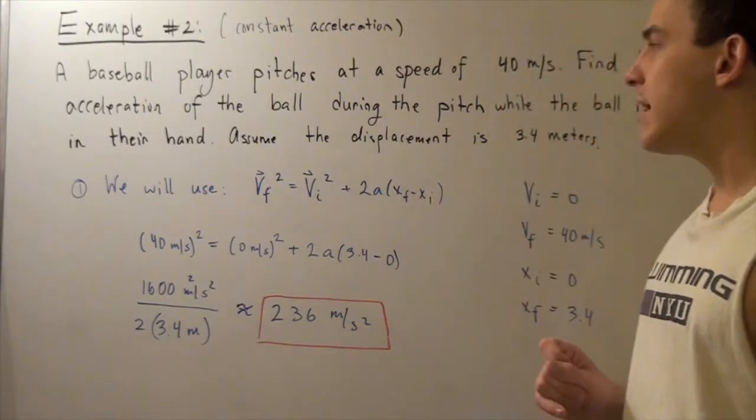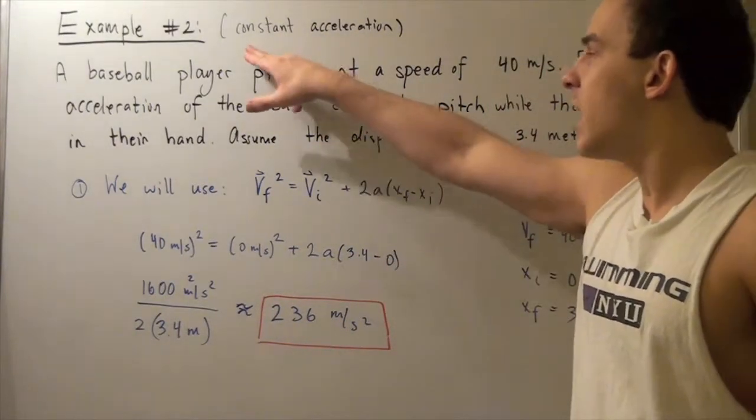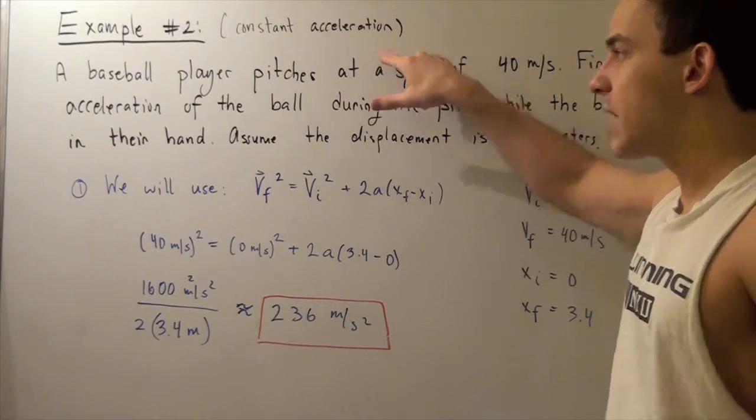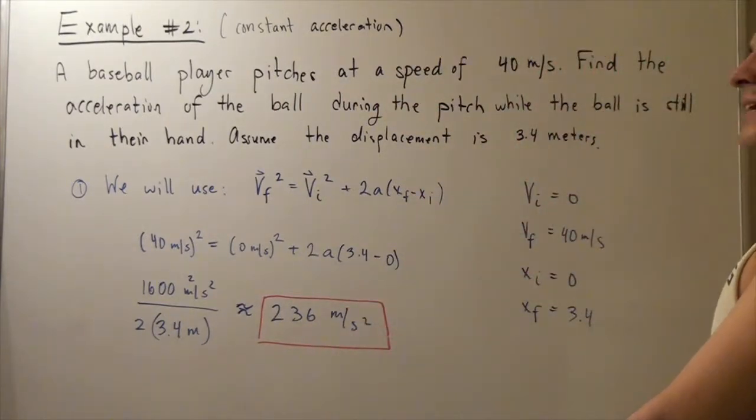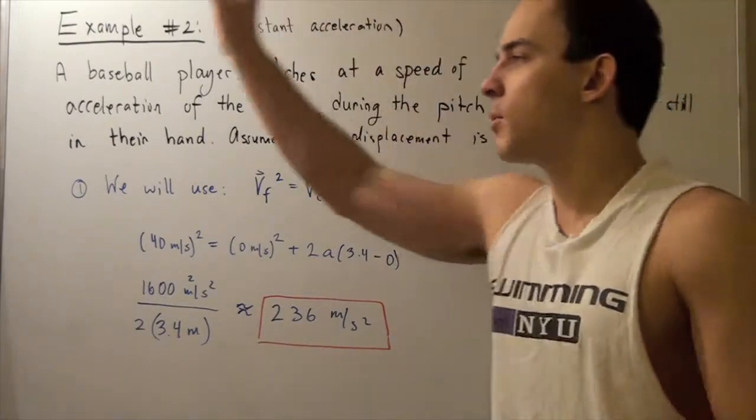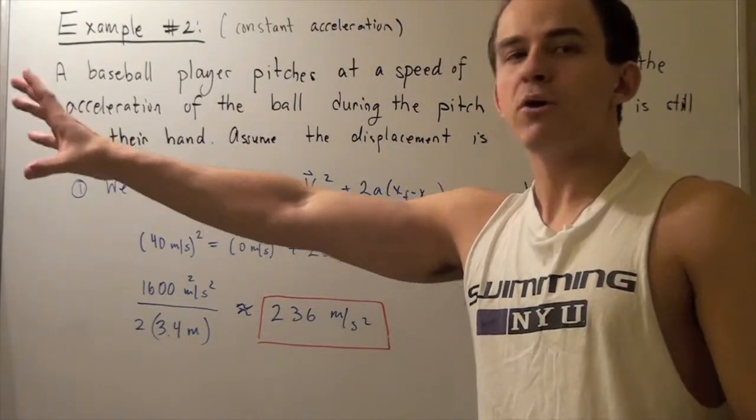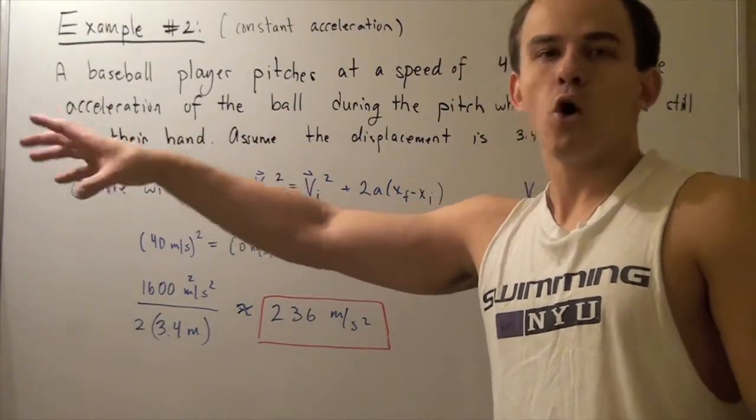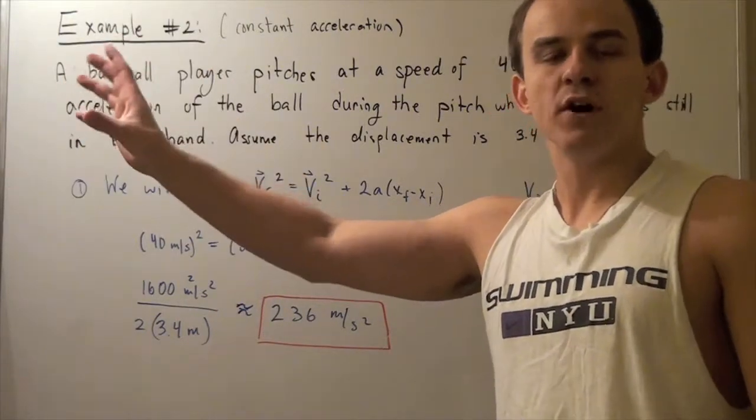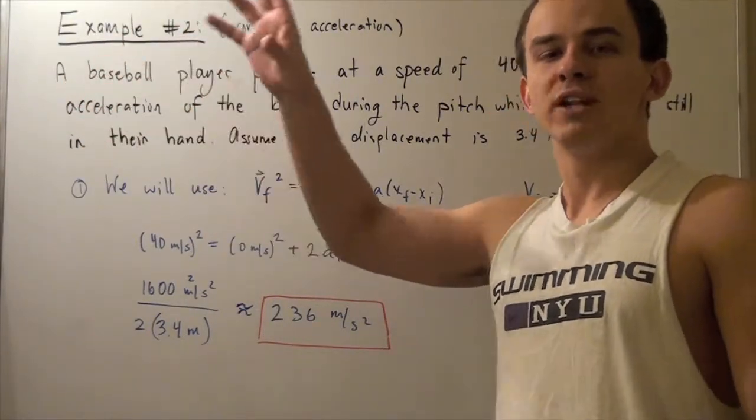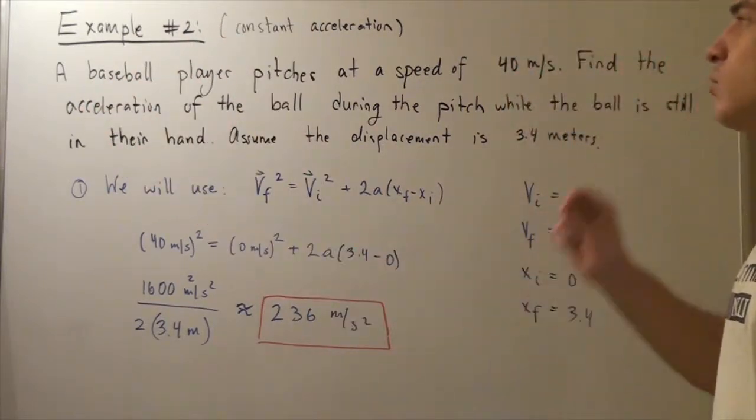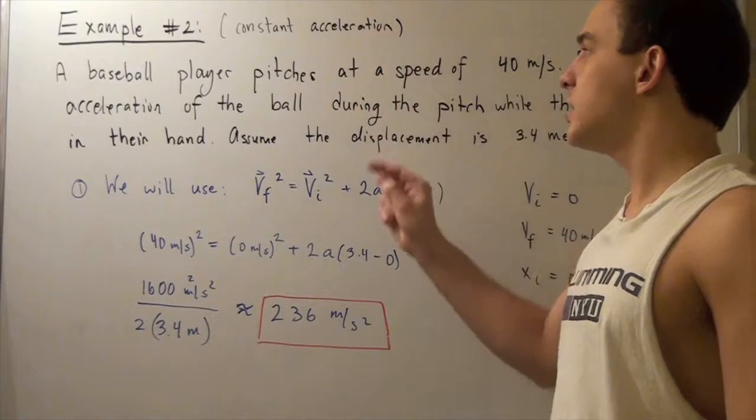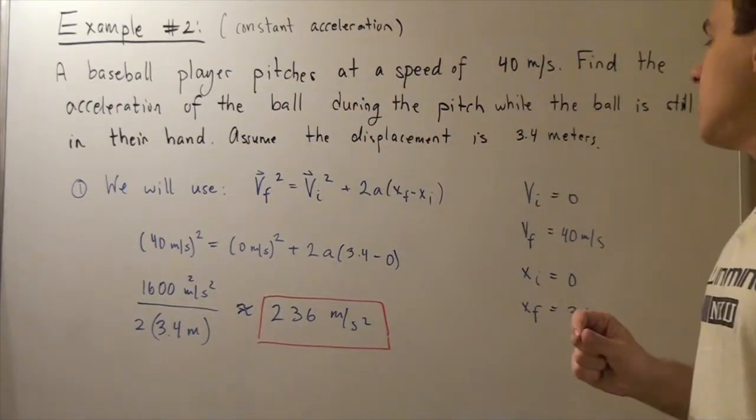We're also going to make the assumption that we have constant acceleration. That simply means that from the point the person begins the pitch to the point the person releases the ball, the ball travels a displacement of 3.4 meters and accelerates at a constant acceleration. We want to find what that constant acceleration is under these conditions.